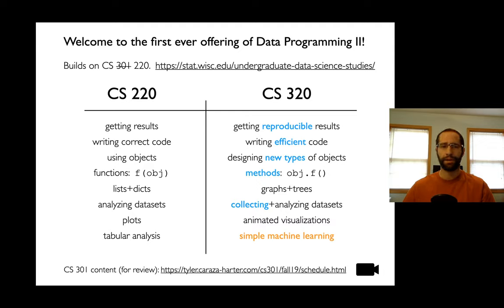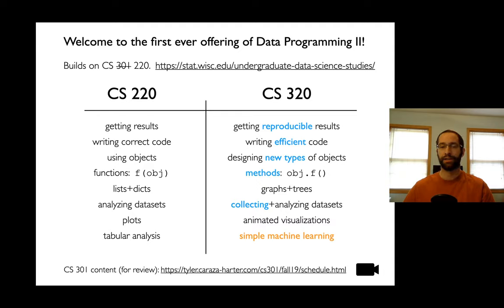In CS220, we learned about objects and references — maybe having two variables referencing the same object, like a list or a dictionary. In this class, we're going to be inventing new types of objects that we define ourselves. In CS220 we were just defining functions; now we're actually going to be defining methods. I can say object.f() and I'm going to be the one defining f — we never did that in CS220. We learned some basic types like lists and dictionaries; now we're going to use our new power to create new types.